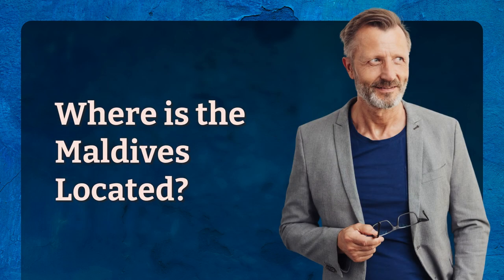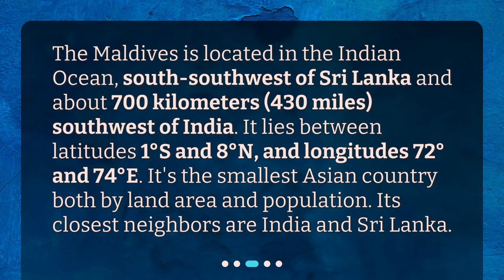Where is the Maldives located? The Maldives is located in the Indian Ocean, south-southwest of Sri Lanka and about 700 kilometers (430 miles) southwest of India. It lies between latitudes 1 degree south and 8 degrees north, and longitudes 72 degrees and 74 degrees east. It's the smallest Asian country both by land area and population. Its closest neighbors are India and Sri Lanka.